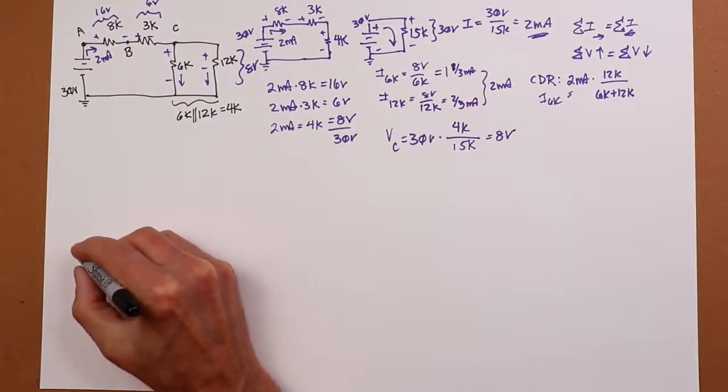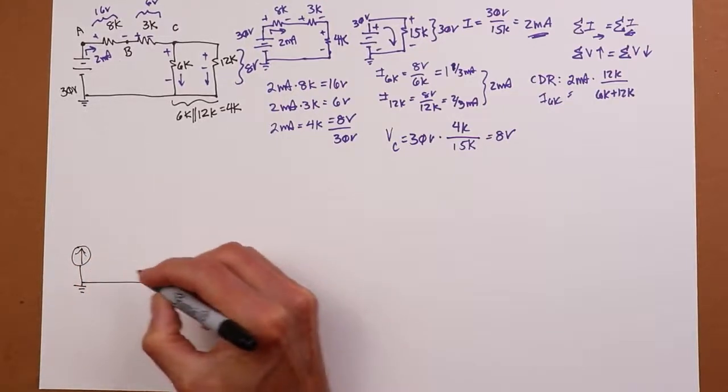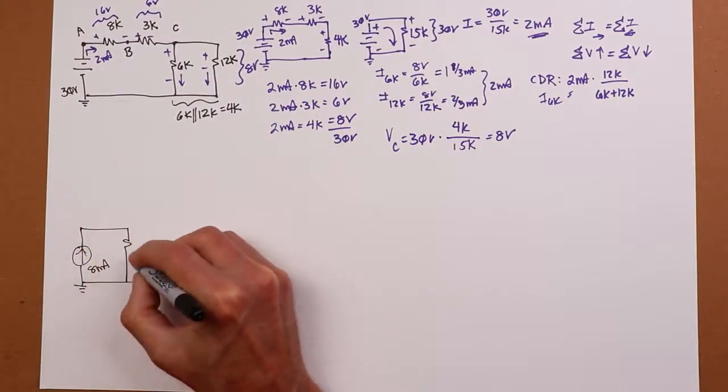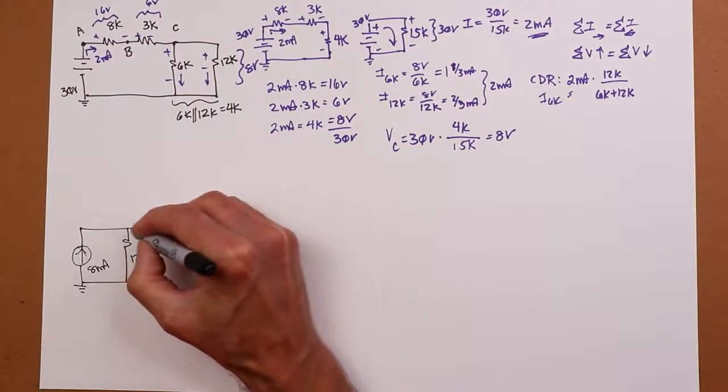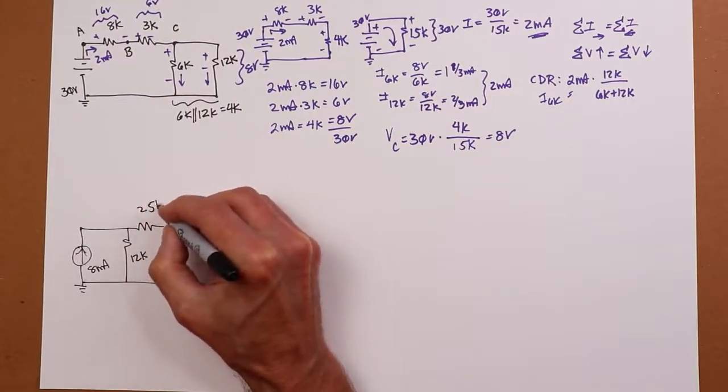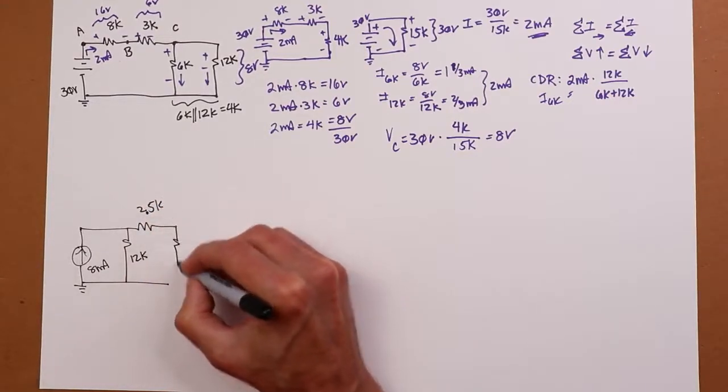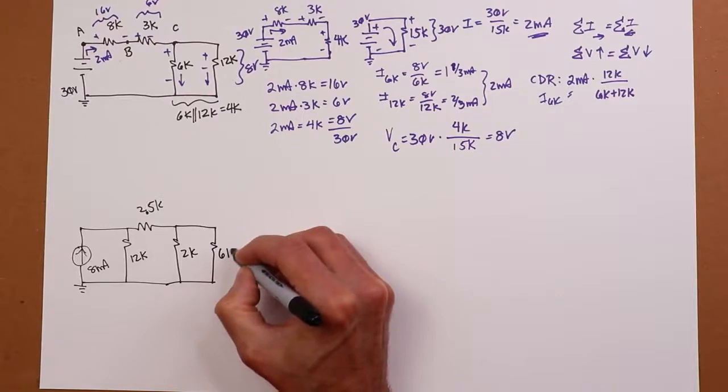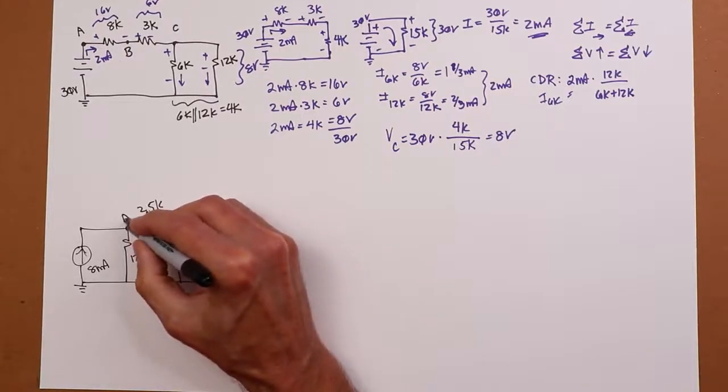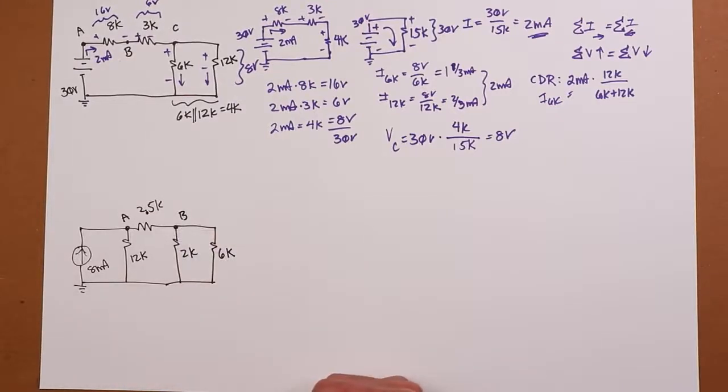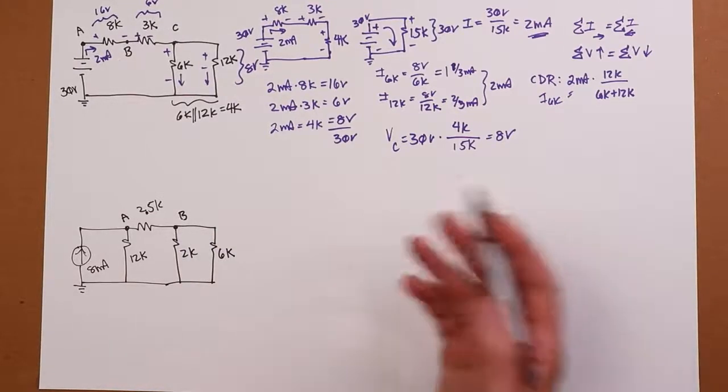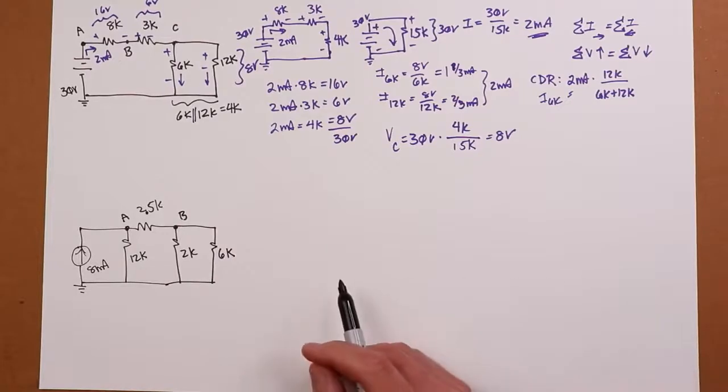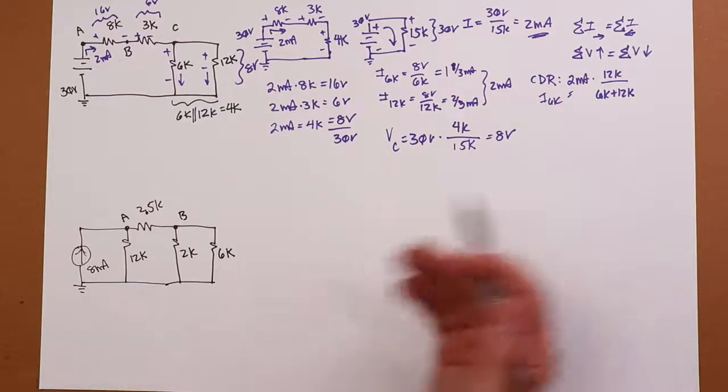This time, I'm going to use a current source. Let's make this an 8 milliamp current source, and I'm going to put a 12K over here, a 2.5K over here, 2.5K, and I'll just put another parallel set out here, different values, a 2K and a 6K. Call that point A, call that point B. And, you know, typical kind of questions. What's voltage A to B? What's the current through the 6K? Those kinds of questions. So, you know, where do we begin? What's obviously in series? What's obviously in parallel?